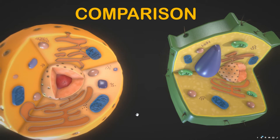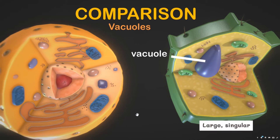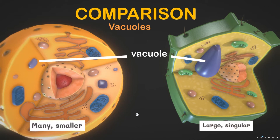Because animals get sugar from the food they eat, they do not need chloroplasts — just mitochondria. Both plant and animal cells have vacuoles. However, plant cells contain a large singular vacuole used for storage and maintaining the shape of the cell. In contrast, animal cells have many smaller vacuoles.